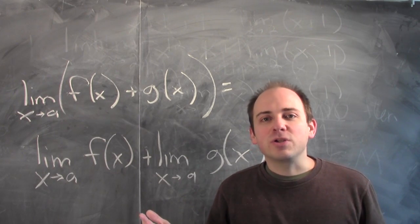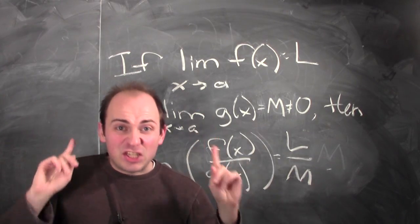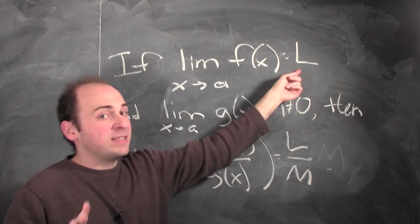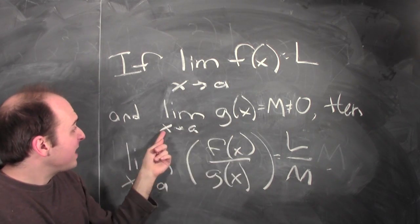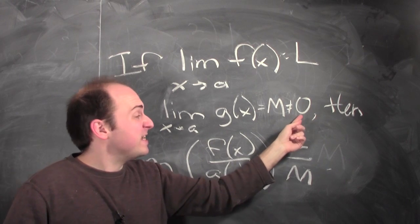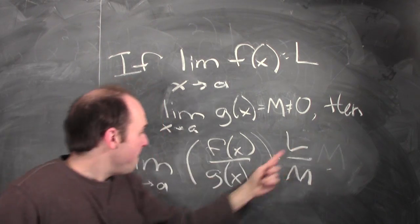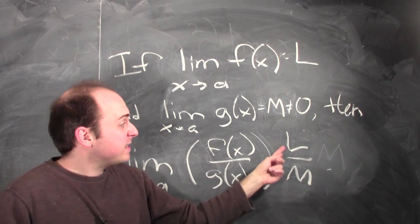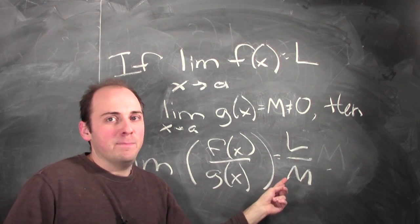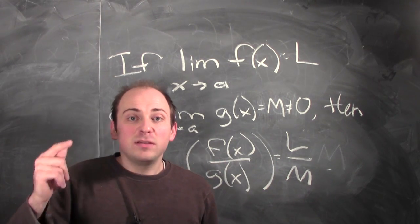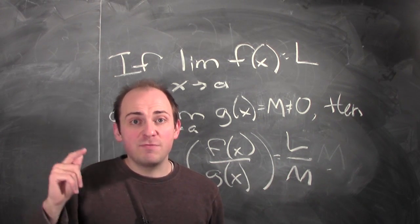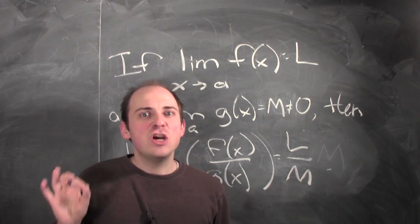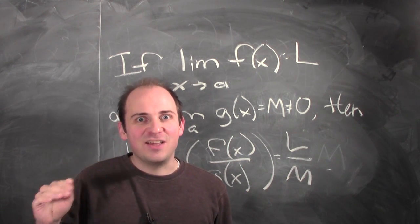What about quotients? Something similar is true for division. If the limit of f of x as x approaches a is l, and the limit of g of x as x approaches a is m, which isn't 0, then the limit of f of x over g of x as x approaches a is l over m. In other words, the limit of the quotient is the quotient of the limits, provided those limits exist and the limit of the denominator is non-zero.